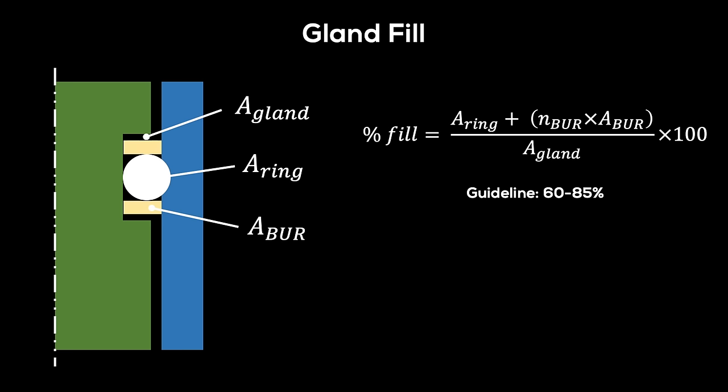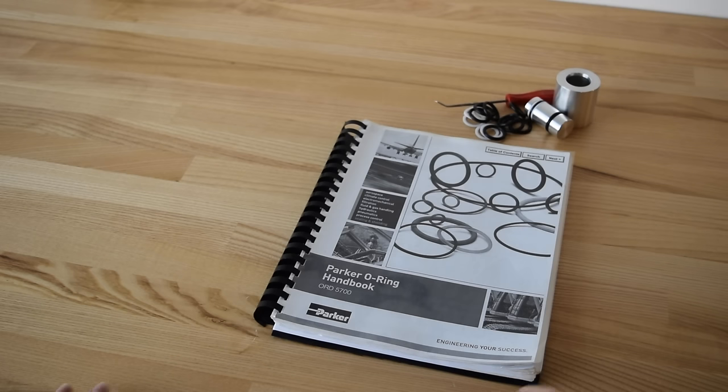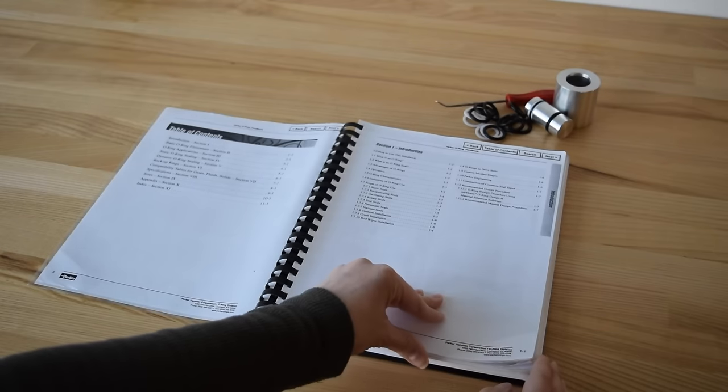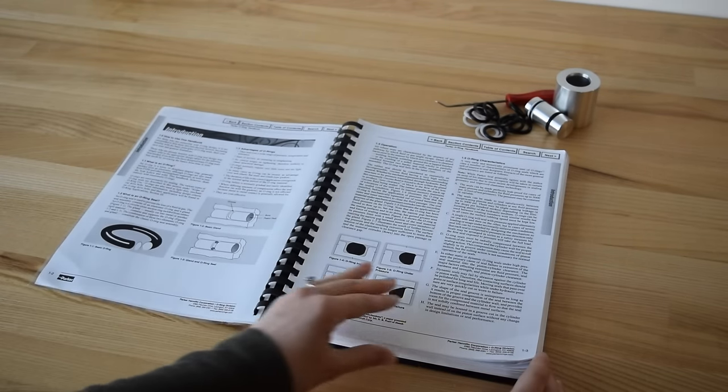A good guideline is to keep the gland fill below 85%. While you could use these equations to calculate the gland dimensions yourself, there is a source for pre-calculated values called the Parker O-ring Handbook. A digital copy is available for free from Parker's website and we've provided a link below.